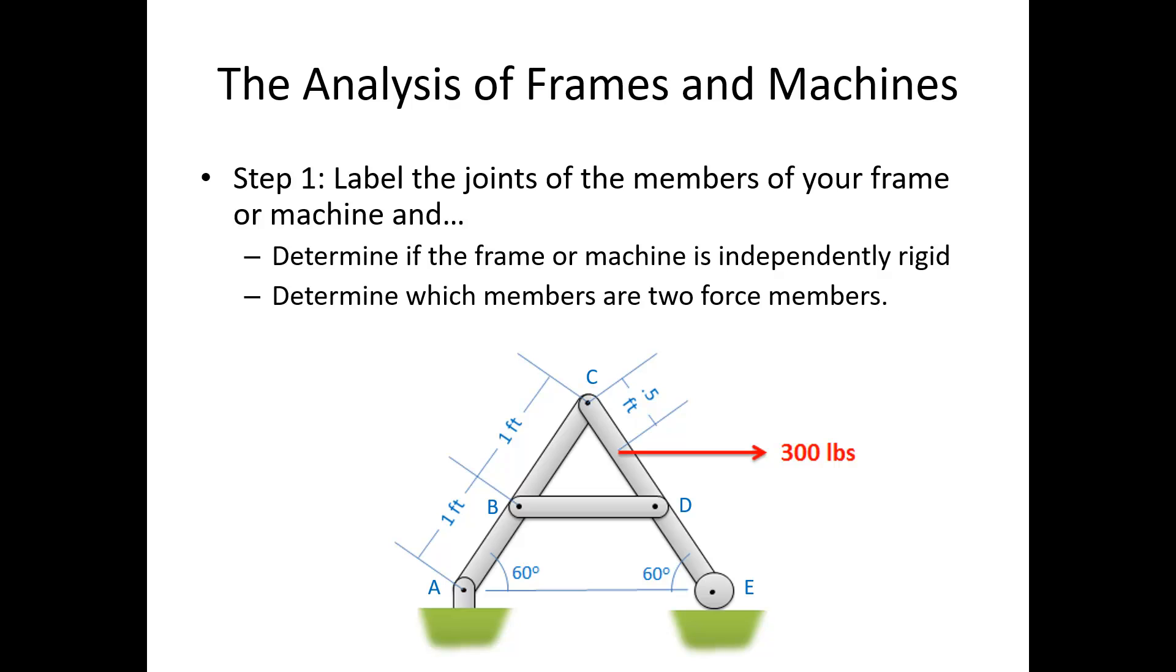Step two is we want to determine which members are two-force members. Are any of the members here a two-force member? And the answer is I've got at least one two-force member in here. Member ABC has three points, it's not a two-force member. Member CDE on the right has four places where forces act, that's not a two-force member. But member BD is connected only at the two endpoints. So member BD is actually going to be a two-force member.